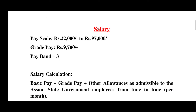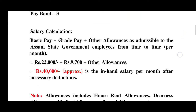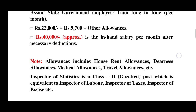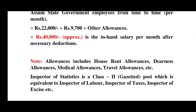Also note that allowances include house rent allowances, dearness allowances, medical allowances, travel allowances, etc. These allowances are the same department-wise. The main allowances are house rent allowances, dearness allowances, medical allowances, and travel allowances.